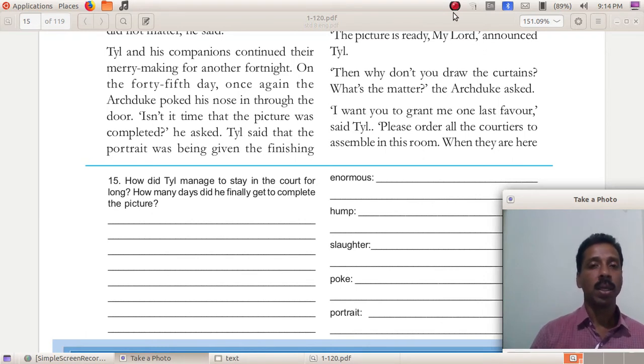As he suggested, he was granted thirty days. On the thirty-first day, the Archduke came and inquired about the completion of the picture. Till said it is not fully completed, he needed some more days. So the king allowed him to continue and was granted two weeks time. Actually, this Till was enjoying with his men by eating, drinking, feasting.